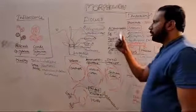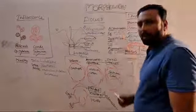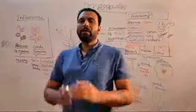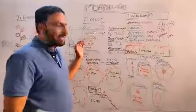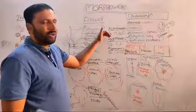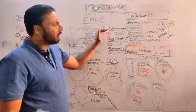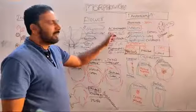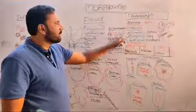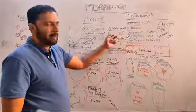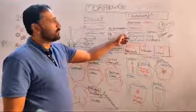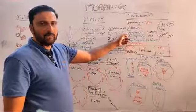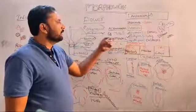Symmetry of the flower: actinomorphic and zygomorphic. When the flower can be cut into any plane to get equal halves, it is called actinomorphic — example Malvaceae (Hibiscus), Brassicaceae (Brassica), Solanaceae (Solanum, Datura).